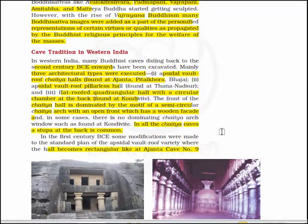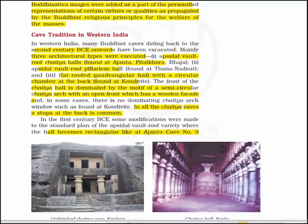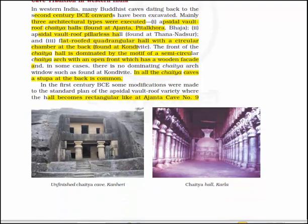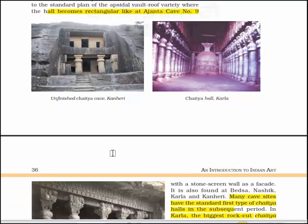The front of the chaitya hall is dominated by the motif of a semi-circular chaitya arch, which was open front with a wooden facade. In some cases there is no dominating chaitya arch window, such as found at Kondivite. In all the chaitya caves a stupa at the back is common. In the 1st century BCE, some modifications were made to the standard apsidal vault roof variety, where the halls became rectangular like at Ajanta cave number 9, with a stone screen wall as a facade.